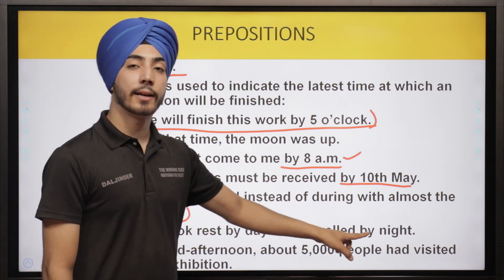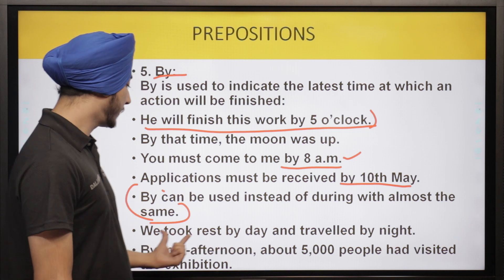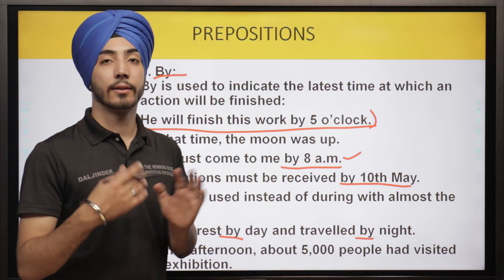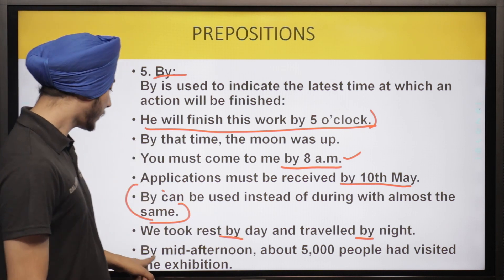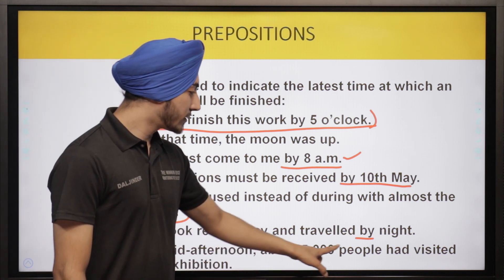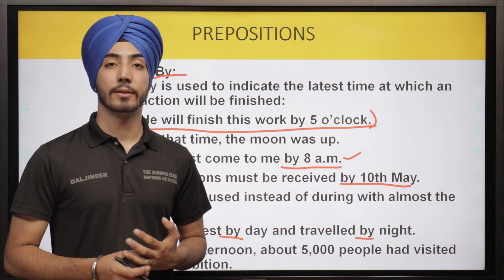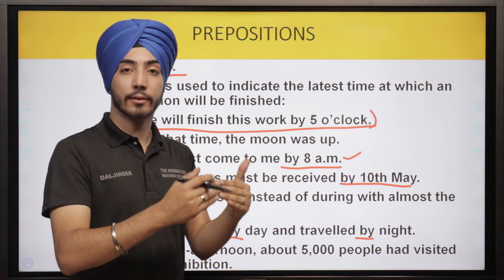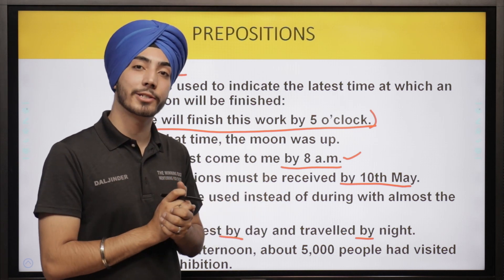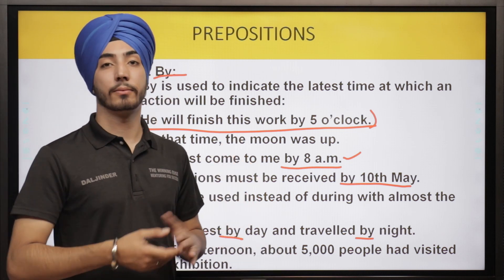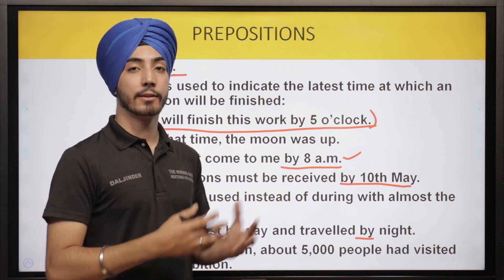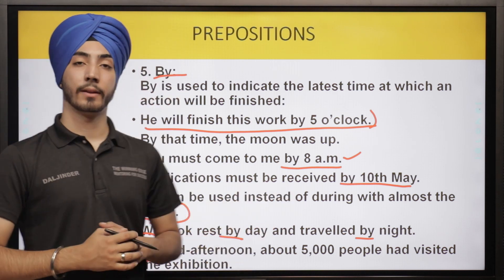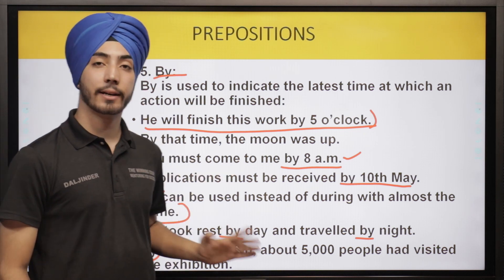'By that time the moon was up.' 'You must come to me by 8 a.m.' — you have to reach by 8 a.m., not later. 'Applications must be received by the 10th of May' — that is the last date by which you can send your application; after that, no applications will be received. 'By' can also be used instead of 'during' in many places — for example, 'We took rest by day and travelled by night.'